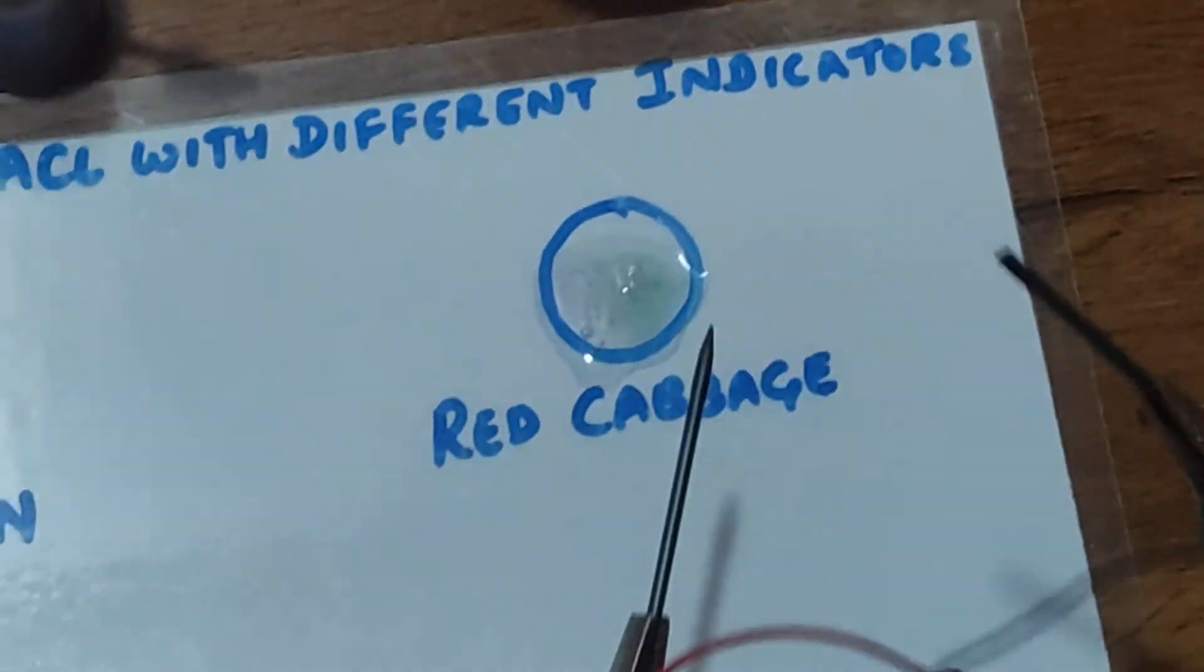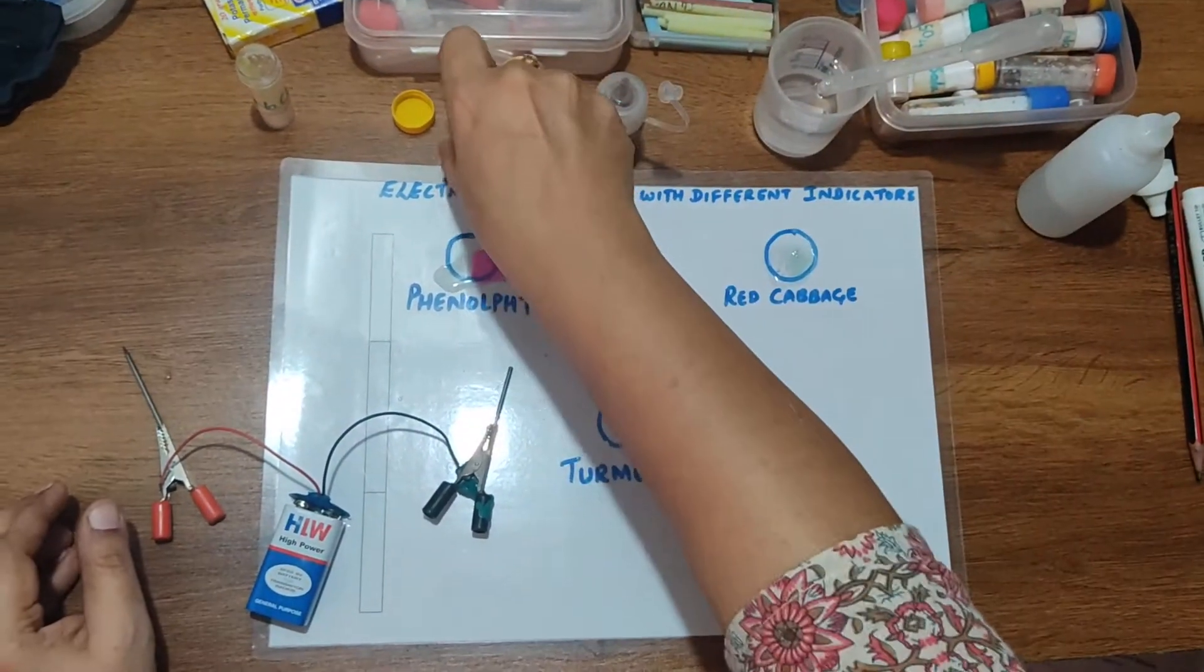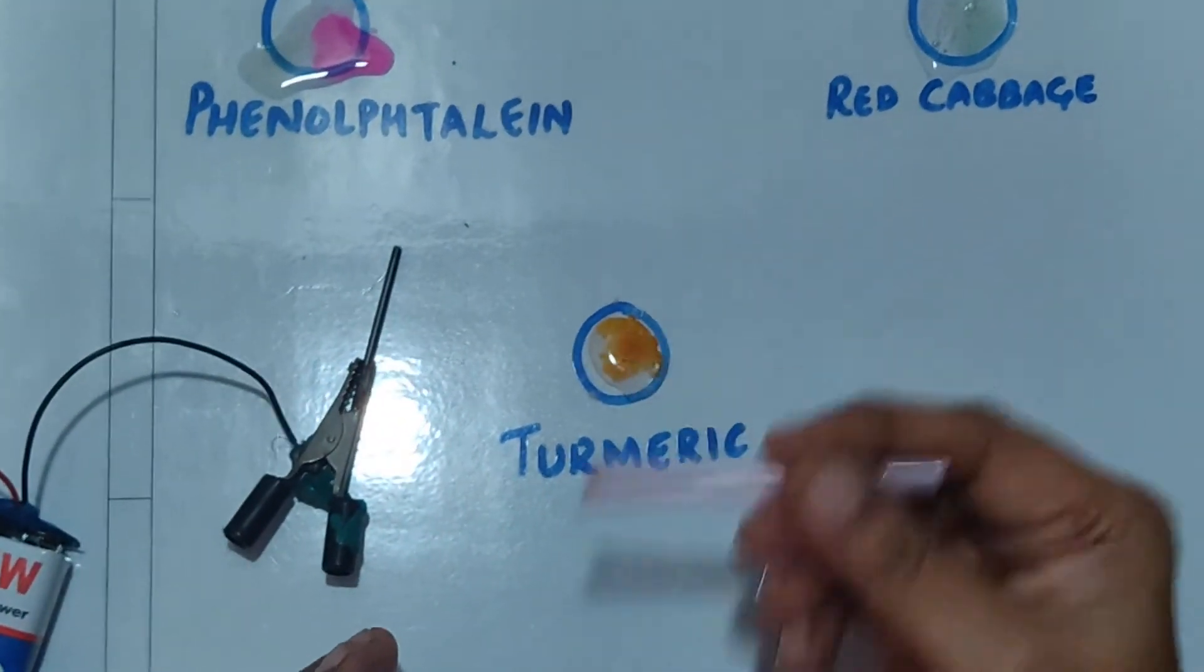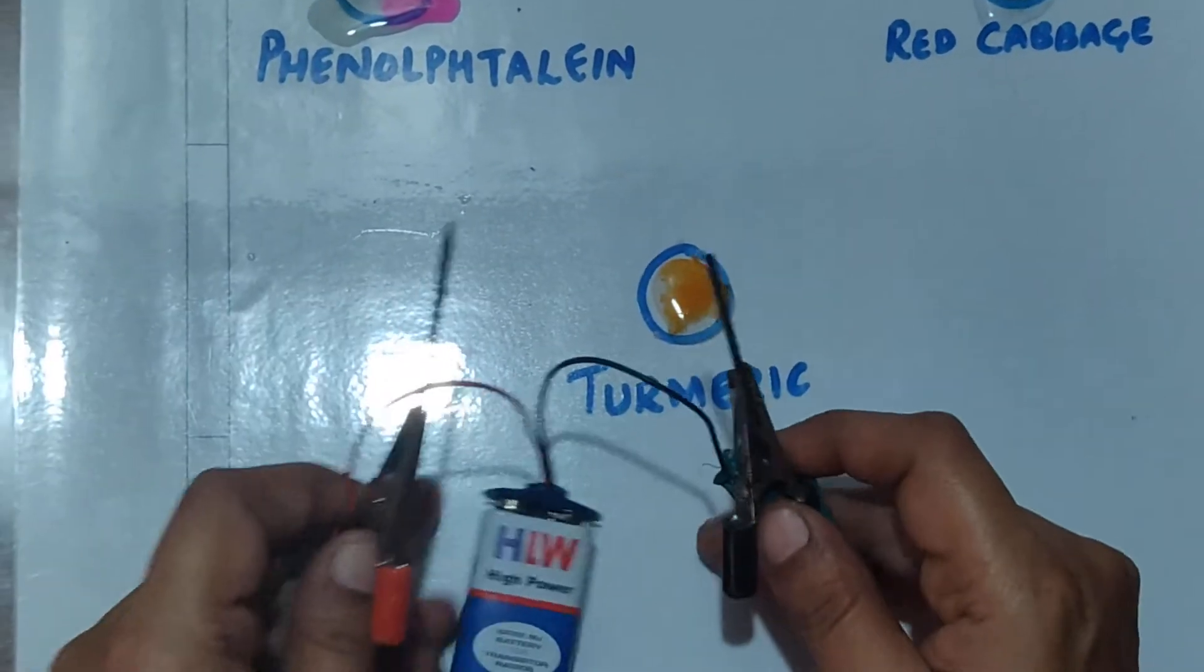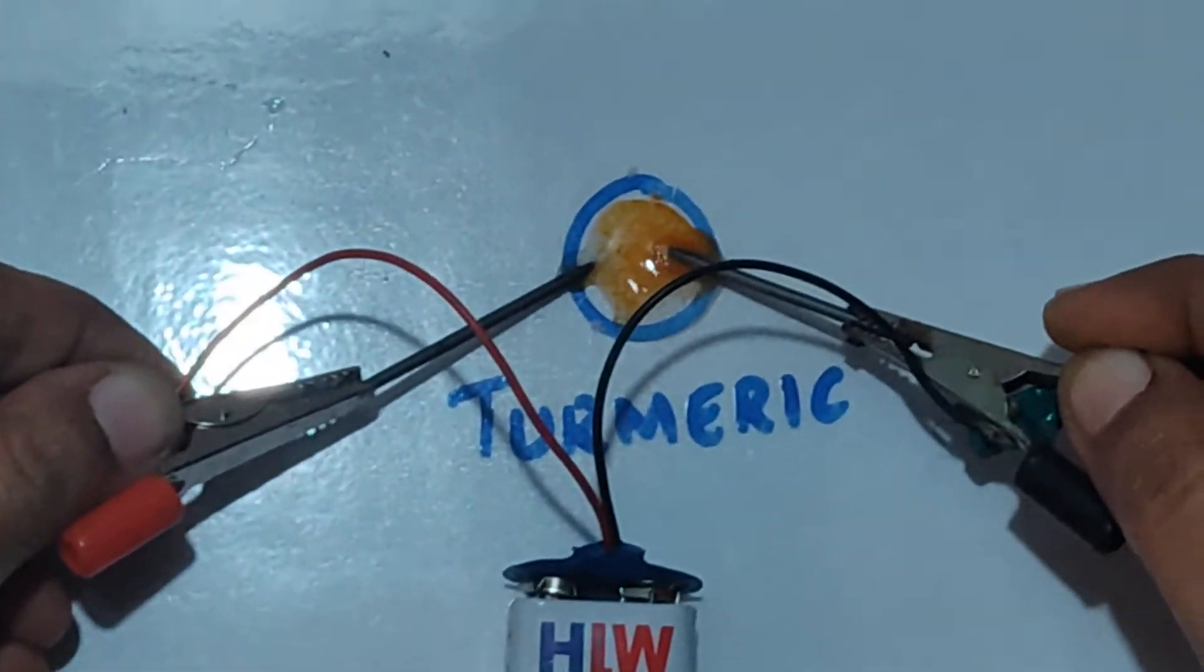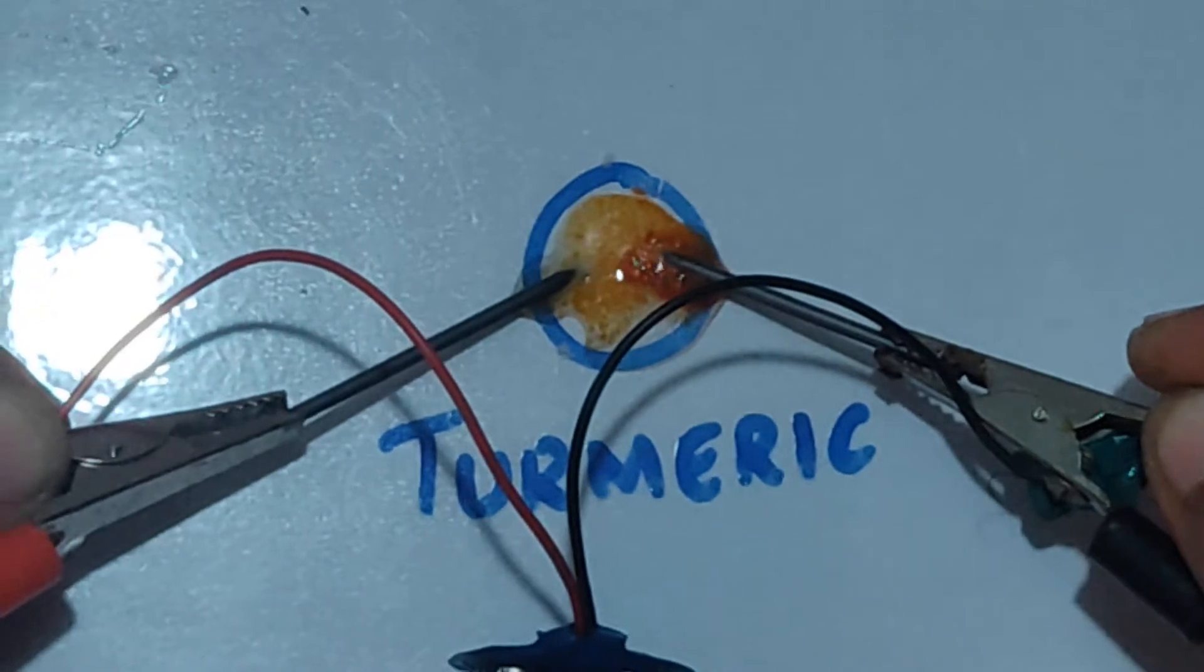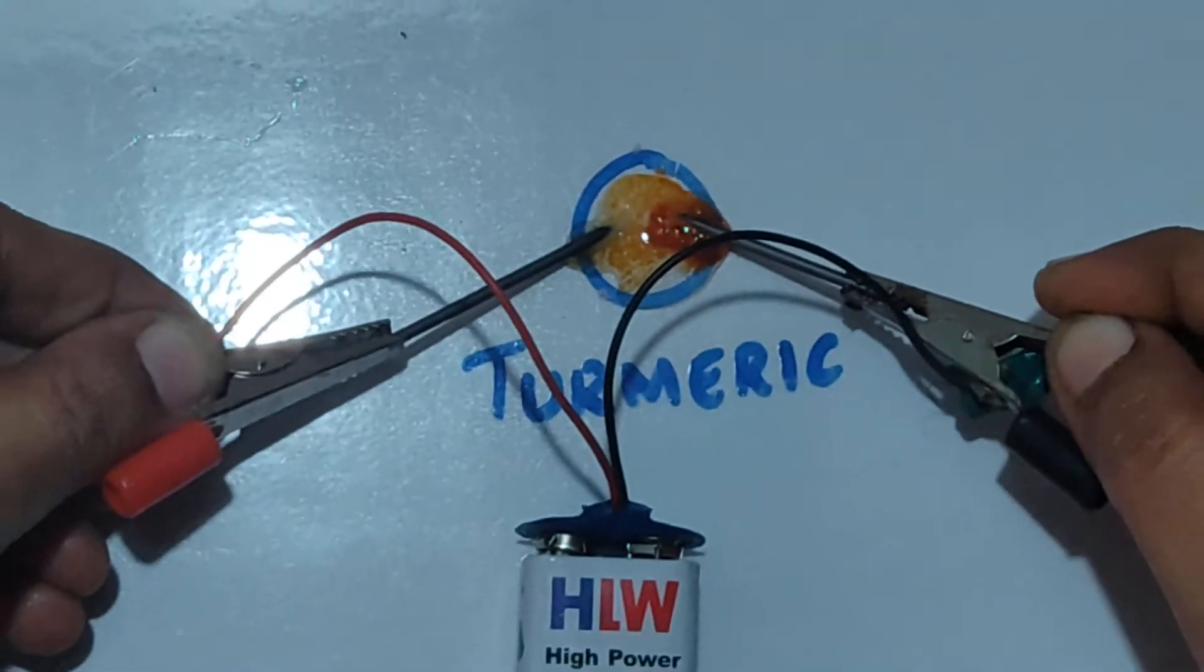Now let me try out with turmeric and see what happens. At the negative electrode you can clearly see the red color, and at the positive electrode you can see slightly bluish green color. The yellow color is changing to bluish green color.